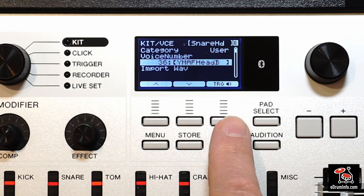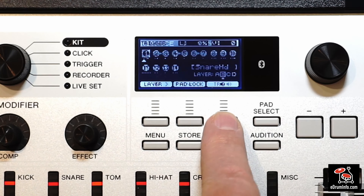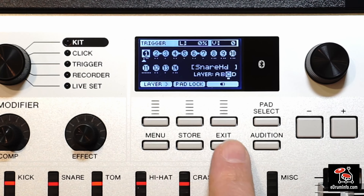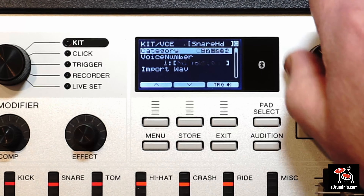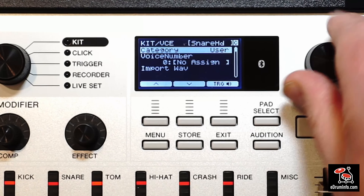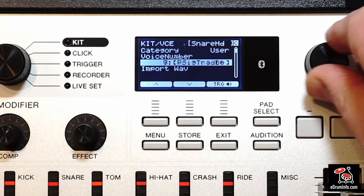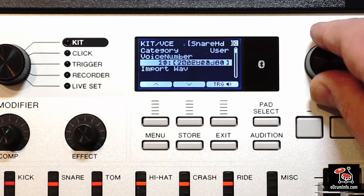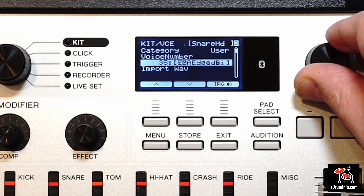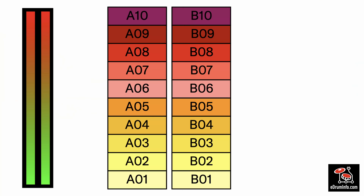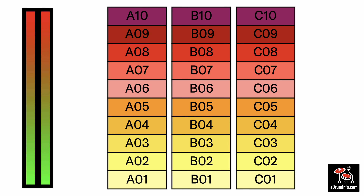Now press TRG F3 and press layer F1 to select layer C without hitting the pad. Press exit, change category to user and voice number to where you have put your snare head user voice C voices. You have now added layer C, the third round robin or repeating sample onto your snare head.